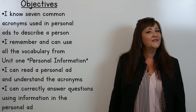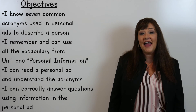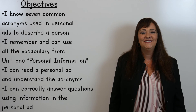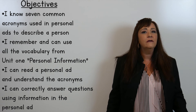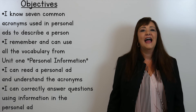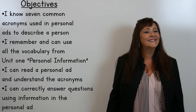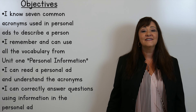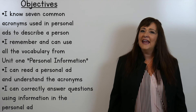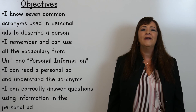Let's look at today's objectives and see if we've learned everything. The first objective: Do you know seven common acronyms used in personal ads, like SM and DM? I think you do. Do you remember and can you use the vocabulary words from all of unit one — words like creative, athletic, outgoing? I think you can. Can you read personal ads and understand those acronyms? We practiced that. And the last objective: Can you correctly answer questions about information in the personal ads? I bet you did great.